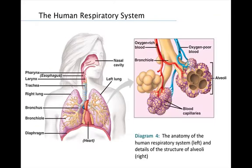Diagram 4 shows the human respiratory system. First, air enters our respiratory system through the nostrils. It is filtered by hairs and warmed, humidified, and sampled for odors as it flows through a maze of spaces in the nasal cavity. From the nasal cavity or mouth, air passes to the pharynx, where the paths for air and food cross.